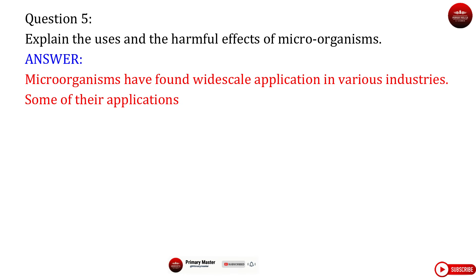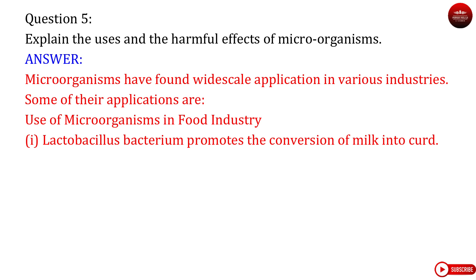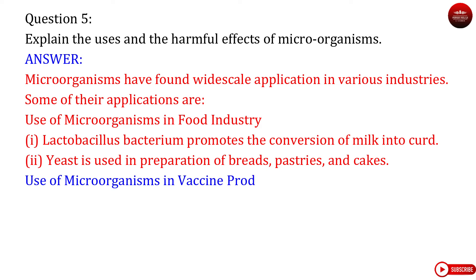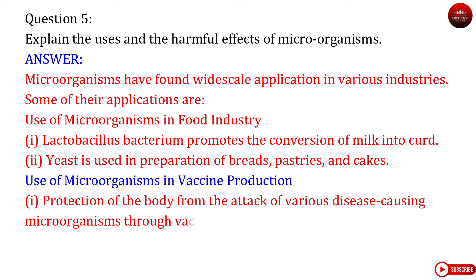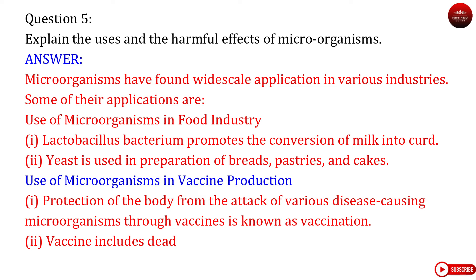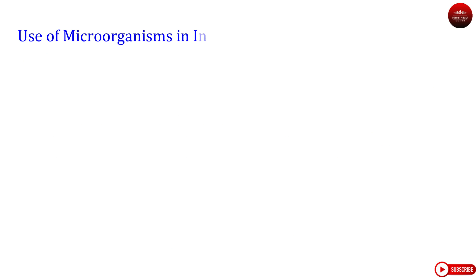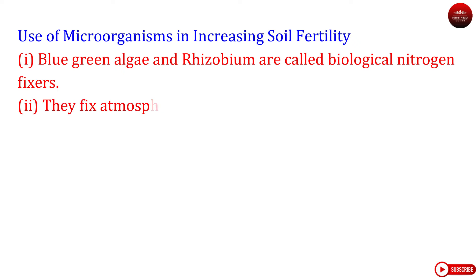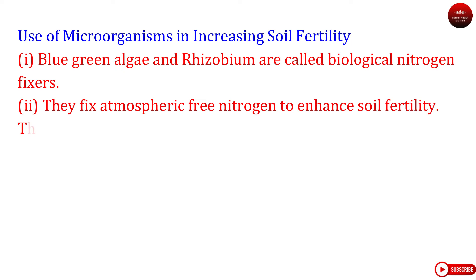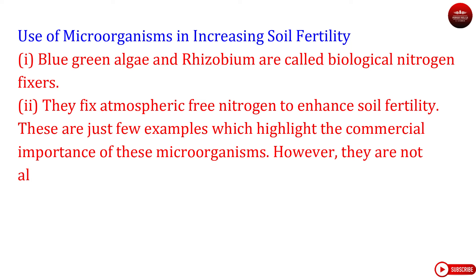Question 5: Explain the uses and the harmful effects of microorganisms. Answer. Microorganisms have found wide-scale application in various industries. Some of their applications are: Use of microorganisms in the food industry — 1. Lactobacillus bacterium promotes the conversion of milk into curd. 2. Yeast is used in preparation of breads, pastries, and cakes. Use of microorganisms in vaccine production — 1. Protection of the body from the attack of various disease-causing microorganisms through vaccines is known as vaccination. 2. Vaccines include dead or weakened microbes that trigger the production of antibodies in the body. Use of microorganisms in increasing soil fertility — 1. Blue-green algae and Rhizobium are called biological nitrogen fixers. 2. They fix atmospheric free nitrogen to enhance soil fertility.